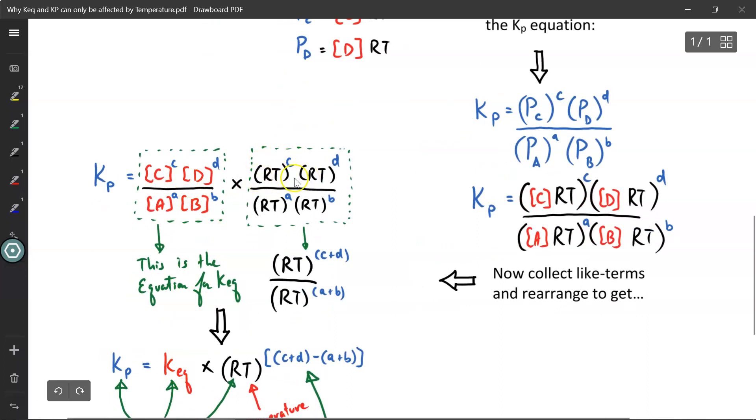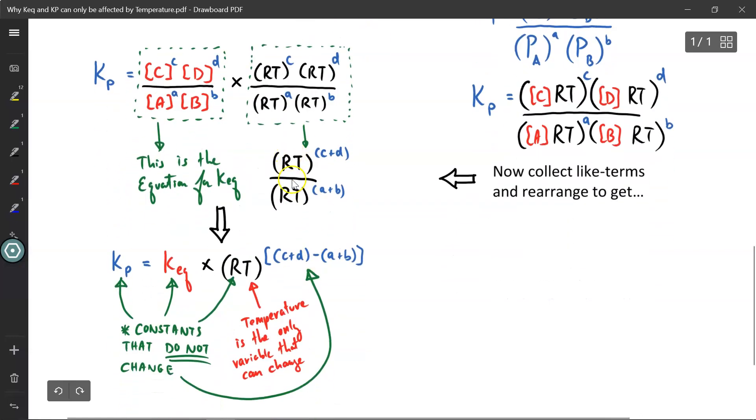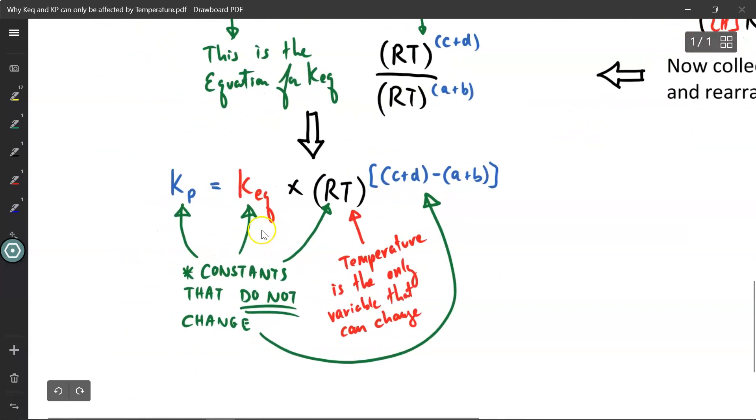Now this over here, I can collect like terms because the bases are identical. I can play around with the exponents this way, where RT is now equal to c plus d. When you multiply like bases, you add the exponents. Similarly, when you divide like bases, you subtract them instead. Once I simplify this entire expression, it comes down to this. We have the Kp value, we have the Keq value, we have the RT value, and then of course the exponents which are from the balanced equations.